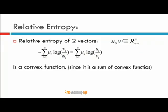The relative entropy of two vectors: suppose you have two n-dimensional positive vectors u and v, where each component of u and each component of v is positive. The relative entropy is defined as the summation over all i from 1 to n of u_i times log(v_i / u_i), or equivalently, u_i times log(u_i / v_i). This is also a convex function, since it is a sum of convex functions.